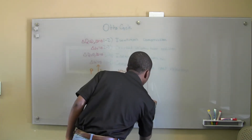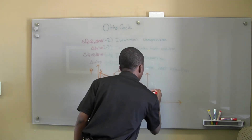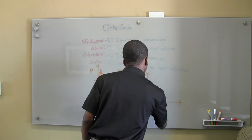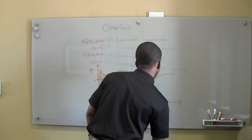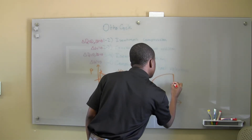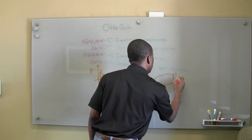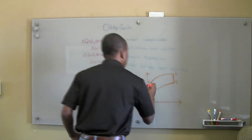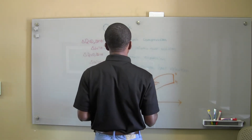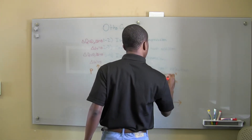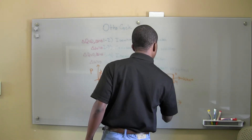For the TS diagram: from 1 to 2 isentropic compression goes straight up (constant entropy). From 2 to 3 we have Q_in going across. From 3 to 4 another isentropic process goes straight down. From 4 to 1 we have Q_out. So we have: work in (1→2), Q_in (2→3), work out (3→4), and Q_out (4→1). Once you memorize these four processes, you can figure everything else out.